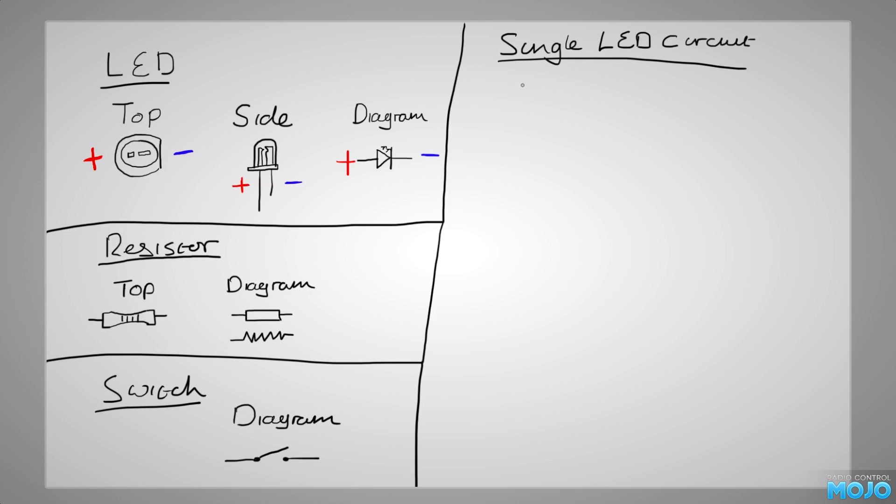The basic circuit goes from positive, through the switch, then the resistor, the LED, and lastly to negative. Now, one LED isn't very useful, so to add more, we connect them up like this. When the switch is closed, the LEDs will light.